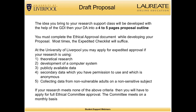Most times the expedited checklist will suffice. At the University of Liverpool, you may apply for expedited approval if your research uses: theoretical research; development of a computer system; publicly available data; secondary data which you have permission to use and which is anonymous; or collecting data from non-vulnerable adults on a non-sensitive subject. If your research meets none of these criteria, you will need to apply for full ethical committee approval, and the committee meets on a monthly basis.